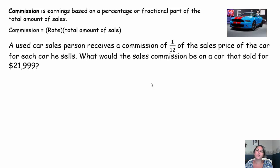So let's take a look at what happens when you sell cars. A used car salesperson receives a commission of one-twelfth of the sales price of the car for each car he sells. So every time he sells a car, he makes one-twelfth of that sale price as a commission. That's what he takes home for having sold the car. What would the sales commission be on a car that sold for $21,999?